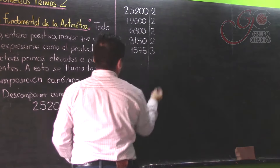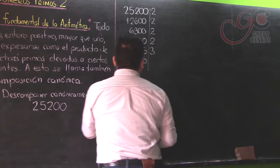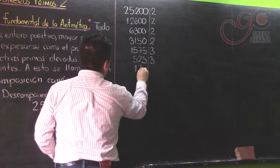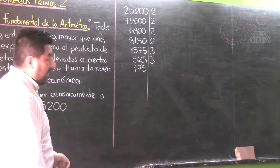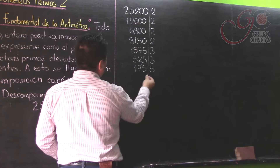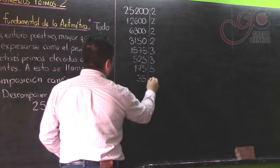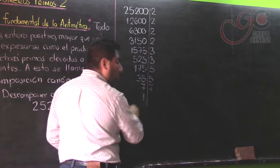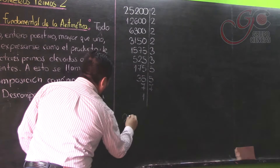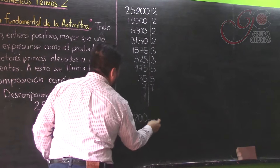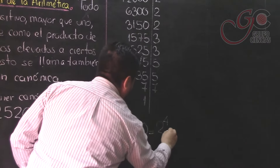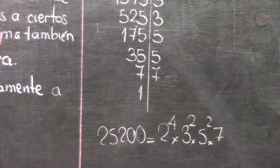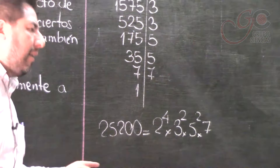Ahora vienen los factores 3. Tercia: 525. Sacándole tercia otra vez: 175. Ya no hay tercia. Ahora sigue quinta: quinta de 175 sería 35. Todavía tiene quinta, que sería 7. Finalmente, 7 entre 7 sería 1. El proceso termina cuando se llega a la unidad. Entonces, podemos decir que 25.200 equivale al producto: 2 a la cuarta por 3 al cuadrado por 5 al cuadrado por 7. Eso es la descomposición canónica de 25.200.